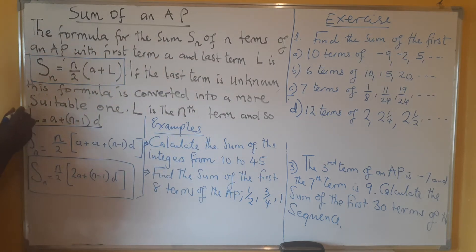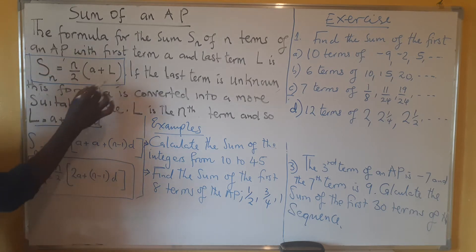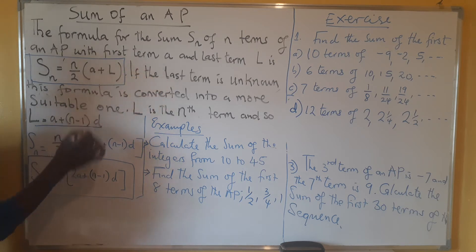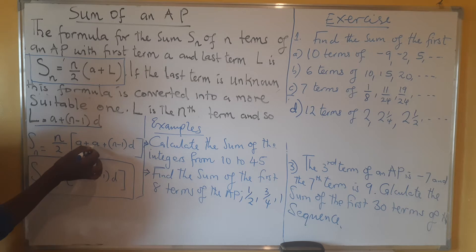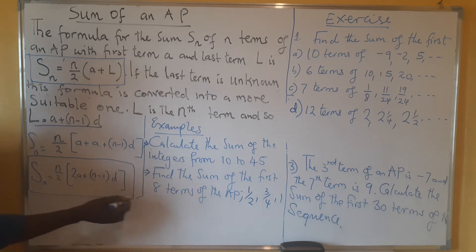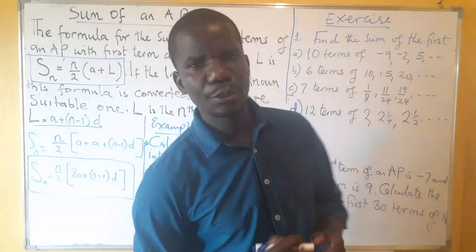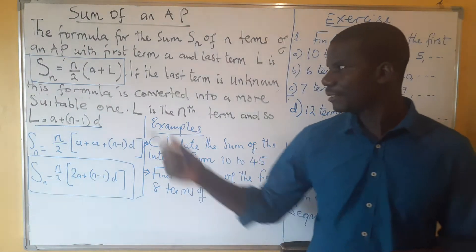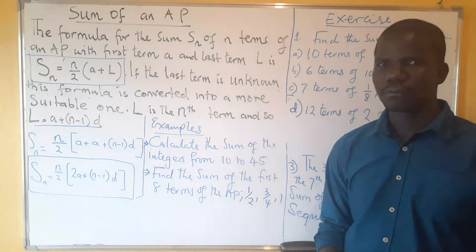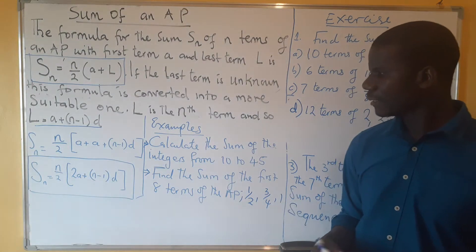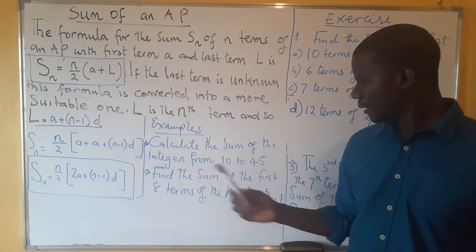When you substitute the last term — which is the same as the formula for the nth term — into the first formula, you'll notice that the two 'a' terms add to give 2a, and the other part remains as is. This gives us the second formula, which we use when we do not know the last term. When the last term is known, you can use the first formula — it's even easier.